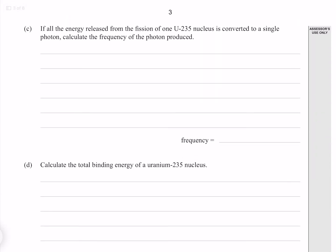If all the energy released from the fission of one uranium-235 nucleus is converted to a single photon, calculate the frequency of the photon produced. We know that the photon energy is equal to Planck's constant times its frequency. Rearranging for frequency, we get E over H, but we don't know the energy.